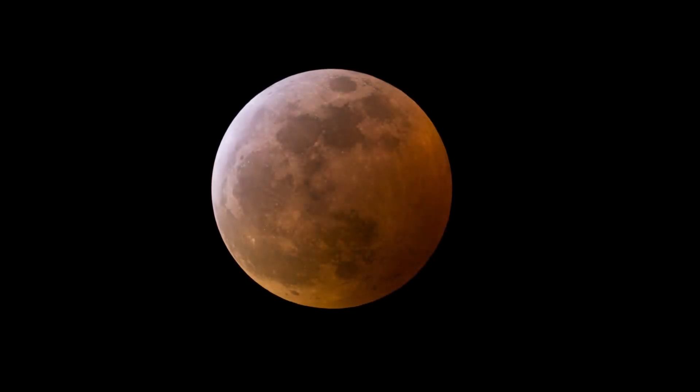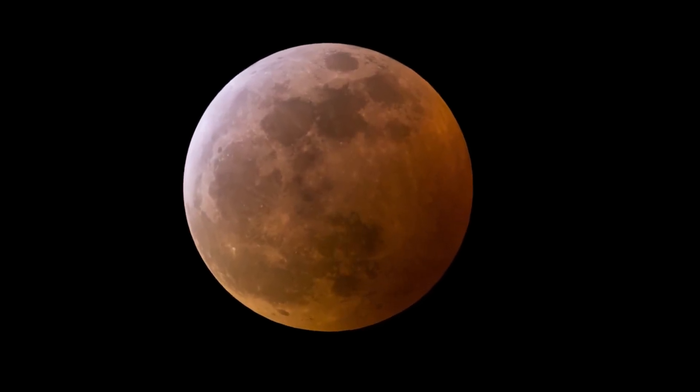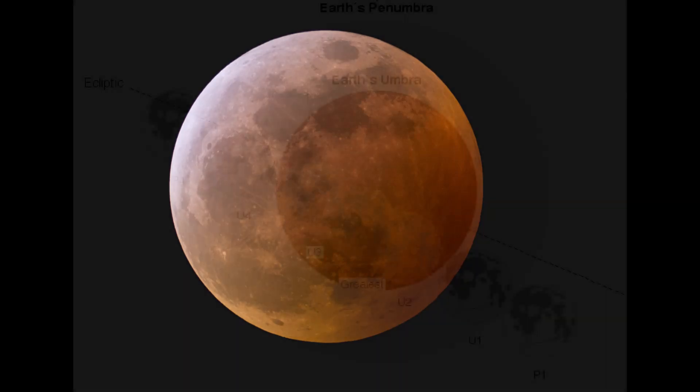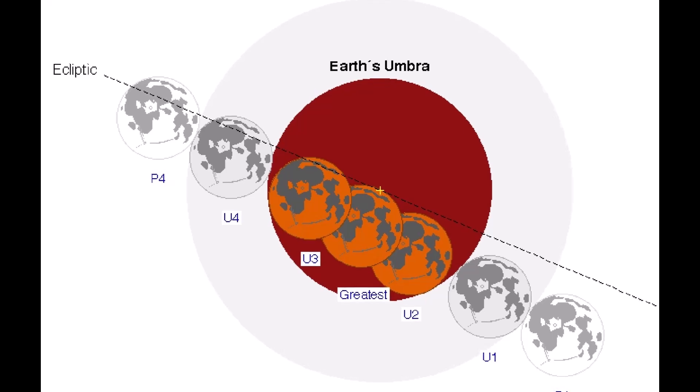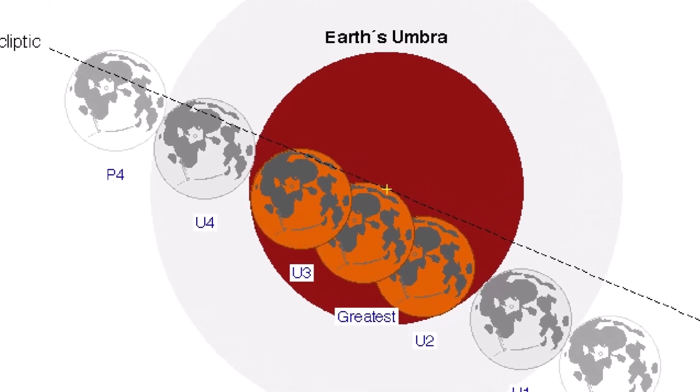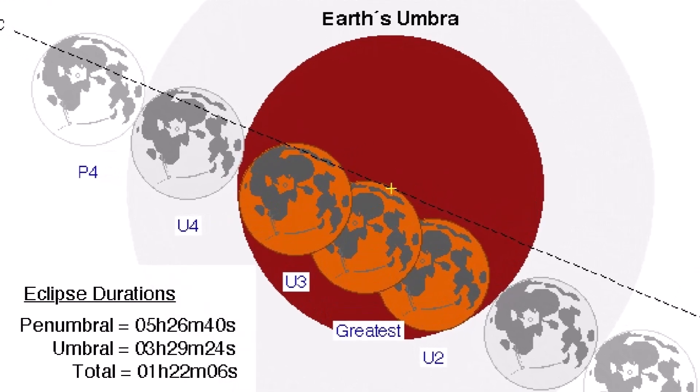The moon is going to be a little bit closer to us, and thus it's going to appear a little bit larger, and it also passes a little deeper into the shadow, which is why the September lunar eclipse will last an hour and 22 minutes total.